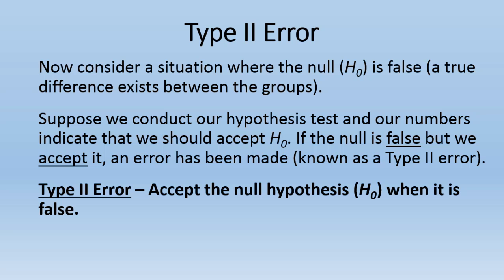But in the above example, our data led us to accept the null, or to fail to reject the null, when the null really was false, because we know in truth that males watch a higher rate of action-oriented movies than do females. But it was just that our sample led us not to conclude that.